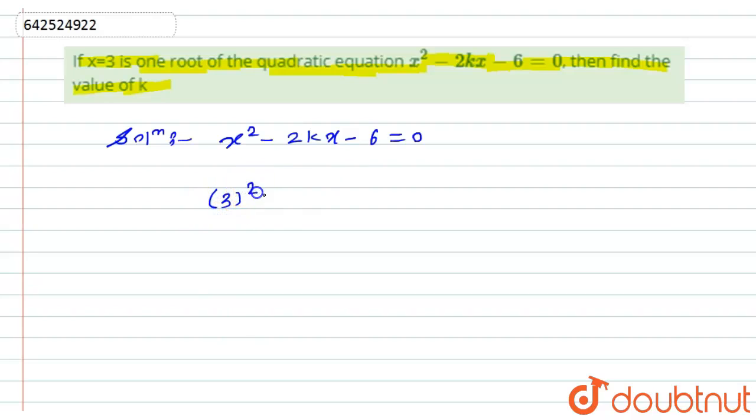It will become 3 square minus 2k. In the place of x, I will put the value of x as 3 minus 6 equals 0. So 3 square is 9 minus 2 times 3, that's 6k, minus 6 equals 0.